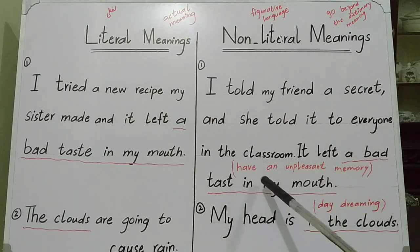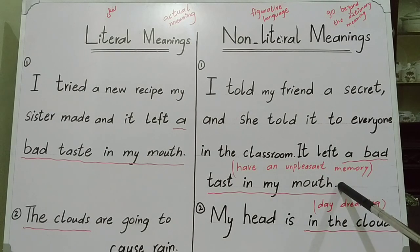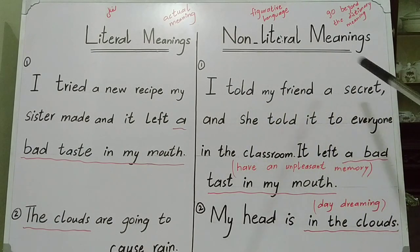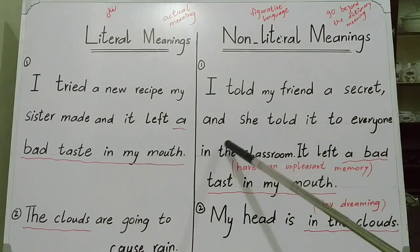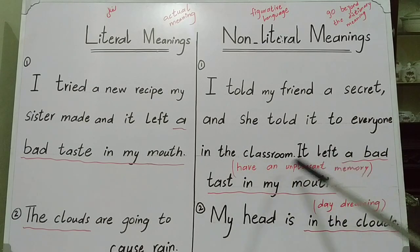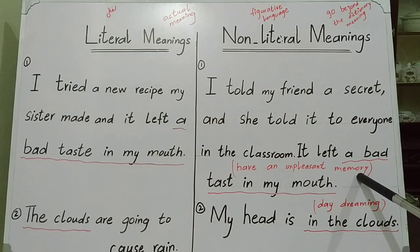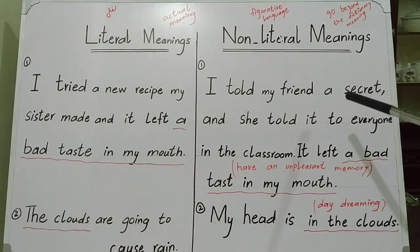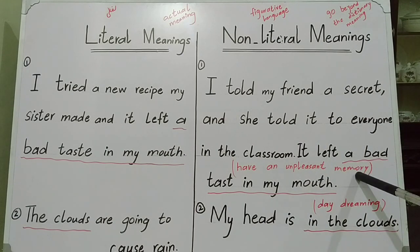Now consider this sentence: 'I told my friend a secret and she told it to everyone in the classroom — it left a bad taste in my mouth.' Here, 'left a bad taste in my mouth' is used with a non-literal meaning. It means I have an unpleasant memory of it. So when an experience leaves a bad taste in your mouth, it means you have an unpleasant memory of it.